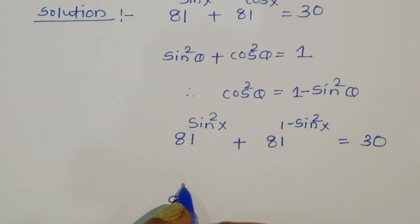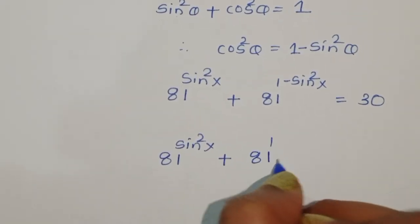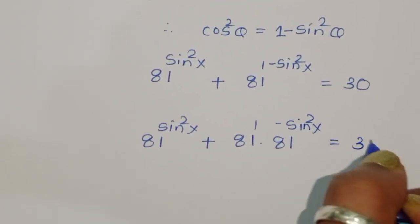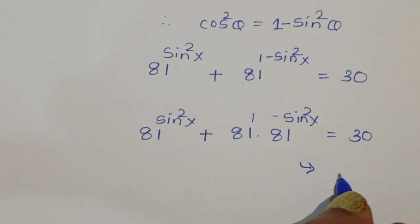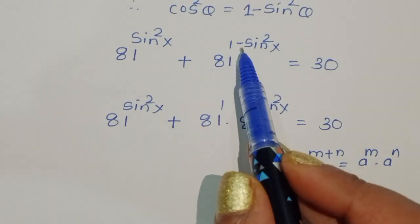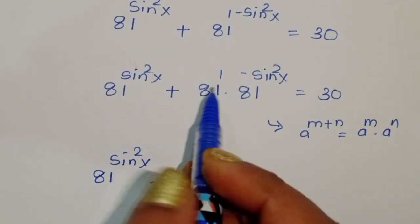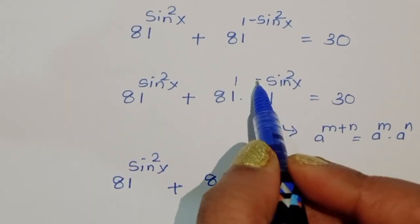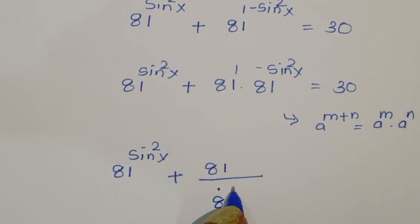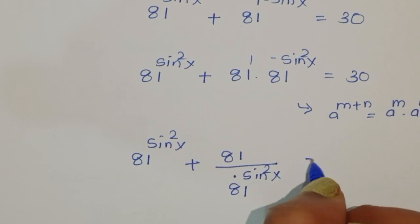So we have 81^(sin²x) + 81^(1 - sin²x) = 30. We apply the exponent law: a^(m+n) = a^m · a^n. So 81^(1 - sin²x) = 81^1 · 81^(-sin²x) = 81 · 81^(-sin²x). Therefore, 81^(sin²x) + 81 · 81^(-sin²x) = 30, which gives us 81^(sin²x) + 81 / 81^(sin²x) = 30.